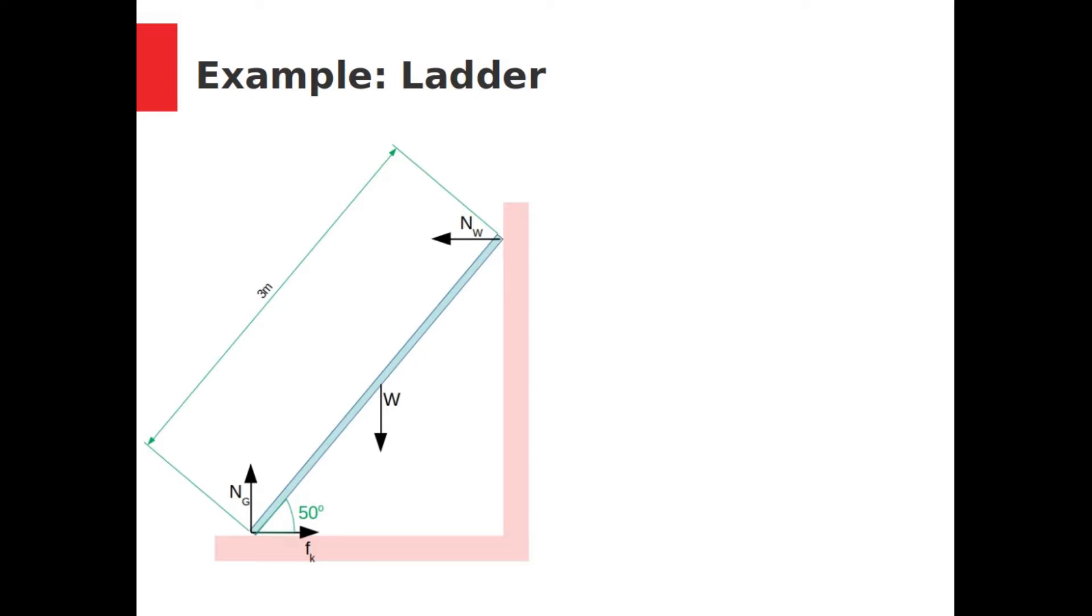Here, we see a 3m, 15kg ladder leaning against a wall at an angle of 50 degrees. The wall is frictionless, but the ground is not. The ladder is not moving. It feels four forces. Weight, normal from the ground, friction with the ground, and normal with the wall. What are the values of the two normal forces and the coefficient of friction?